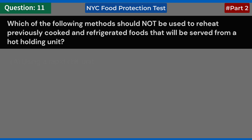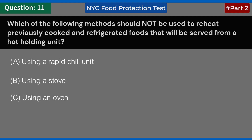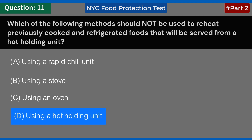Which of the following methods should not be used to reheat previously cooked and refrigerated foods that will be served from a hot holding unit? A. Using a rapid chill unit. B. Using a stove. C. Using an oven. D. Using a hot holding unit. Answer: D. Using a hot holding unit.